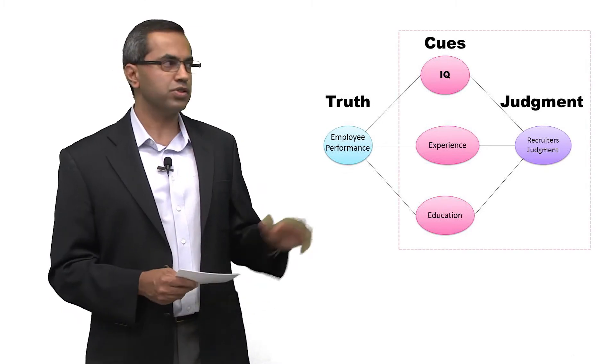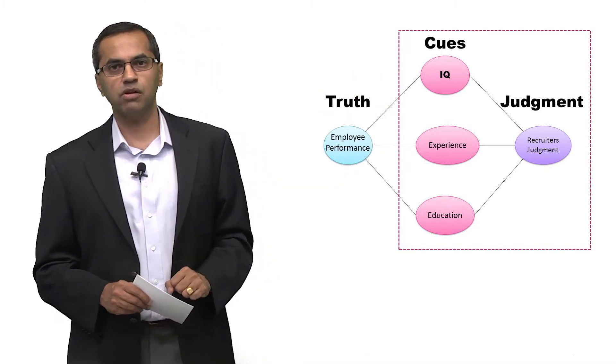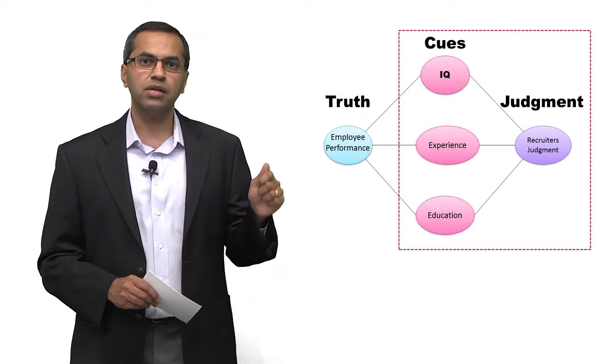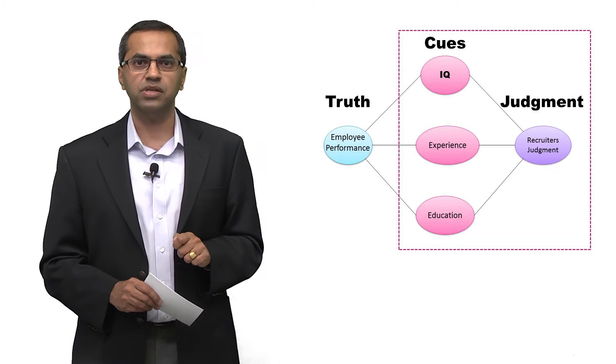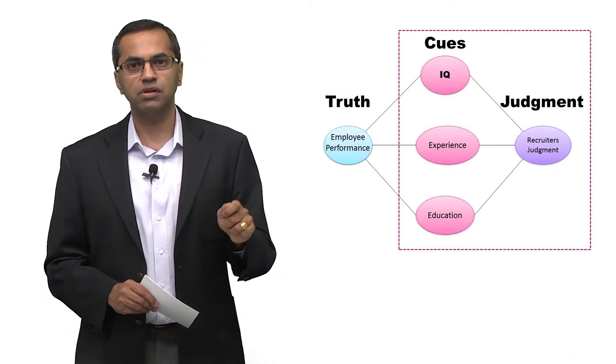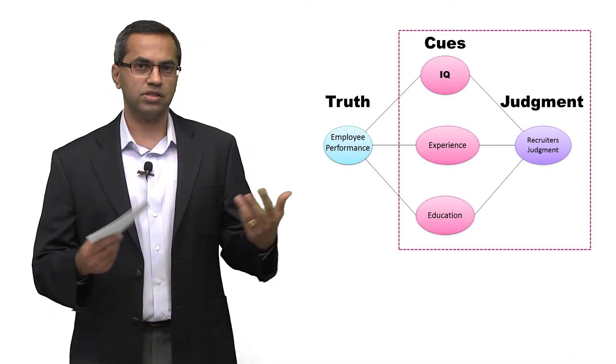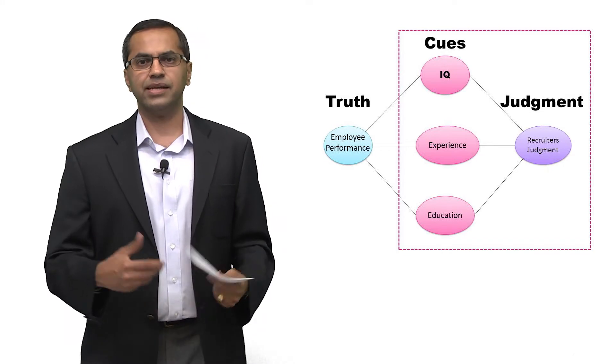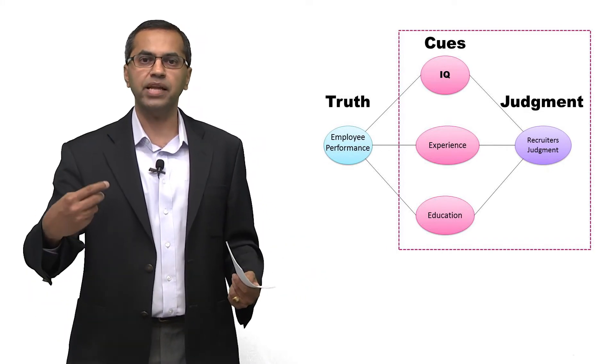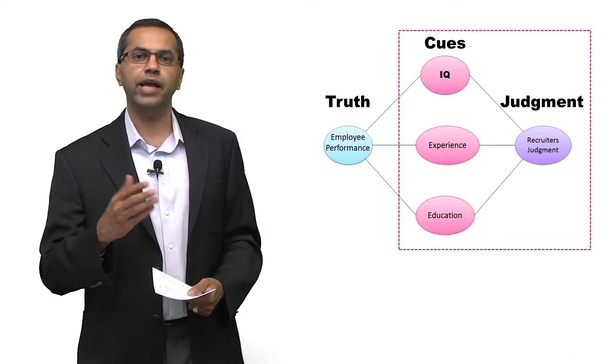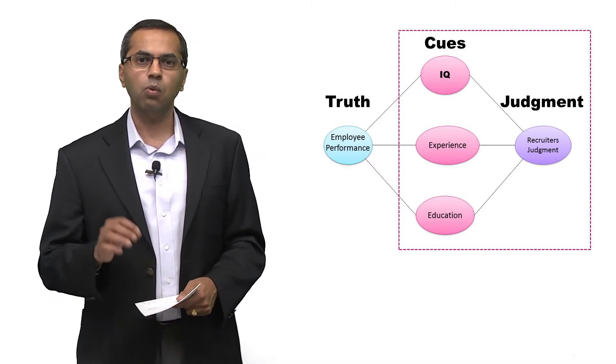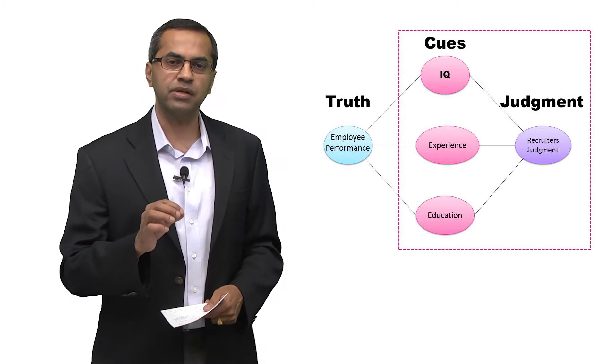Suppose we focused on the right-hand side of this model for a minute. Let's imagine that you could run a regression where you looked at your judgment, the recruiter's judgment, as a function of the three cues. It's like an experiment where you're essentially replicating yourself multiple situations where the cues are different and you're forming a judgment. What does that regression equation tell you?